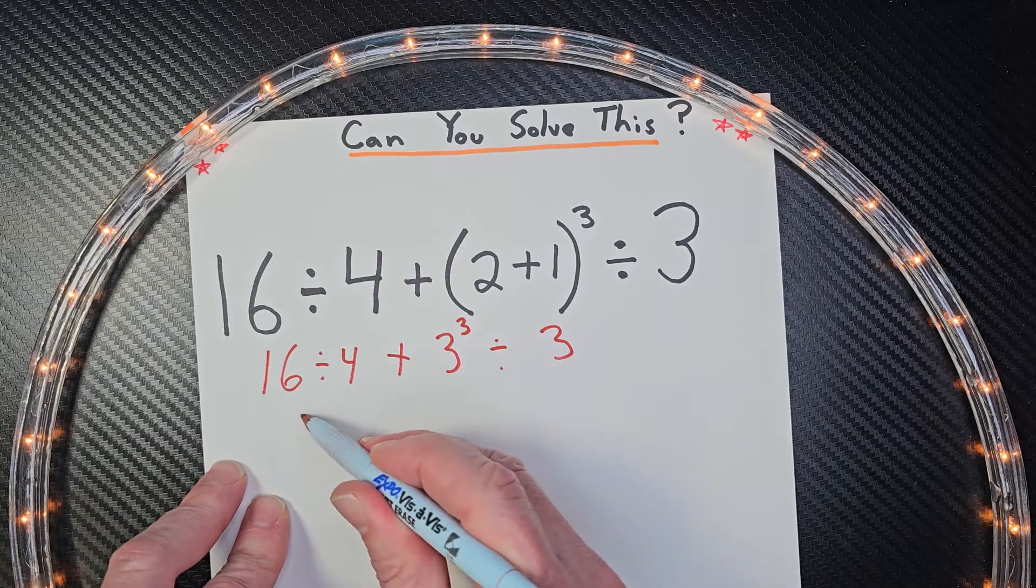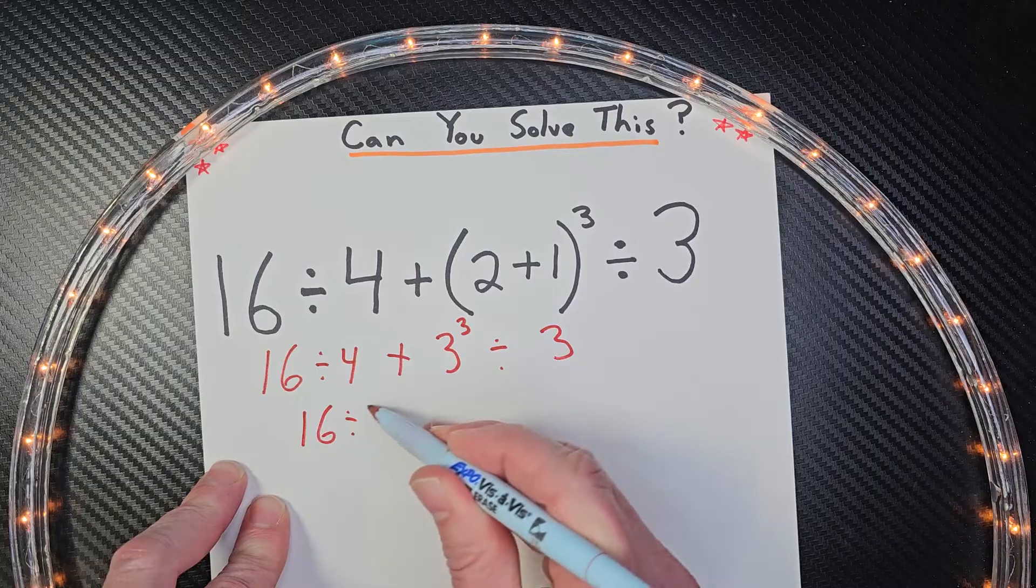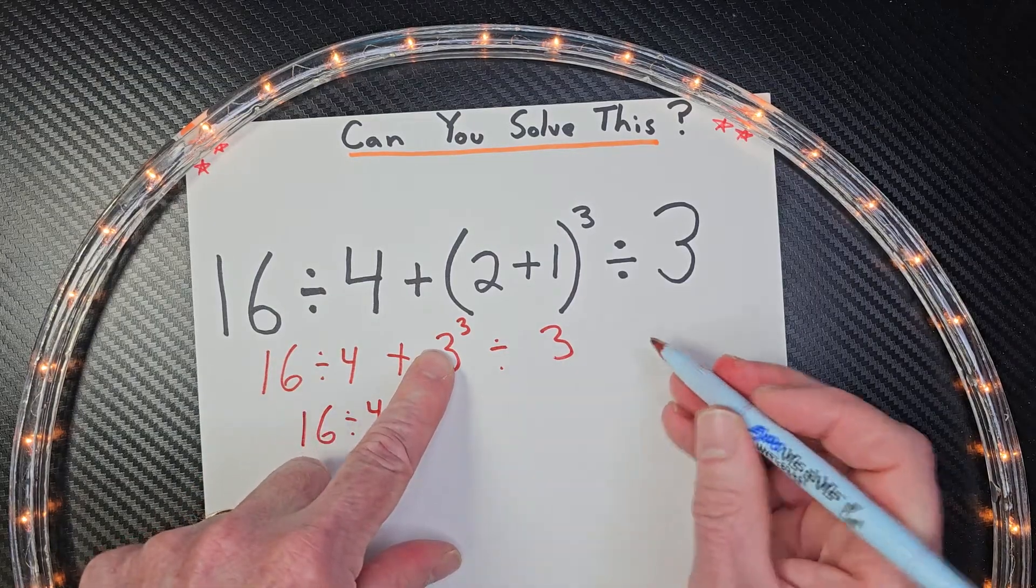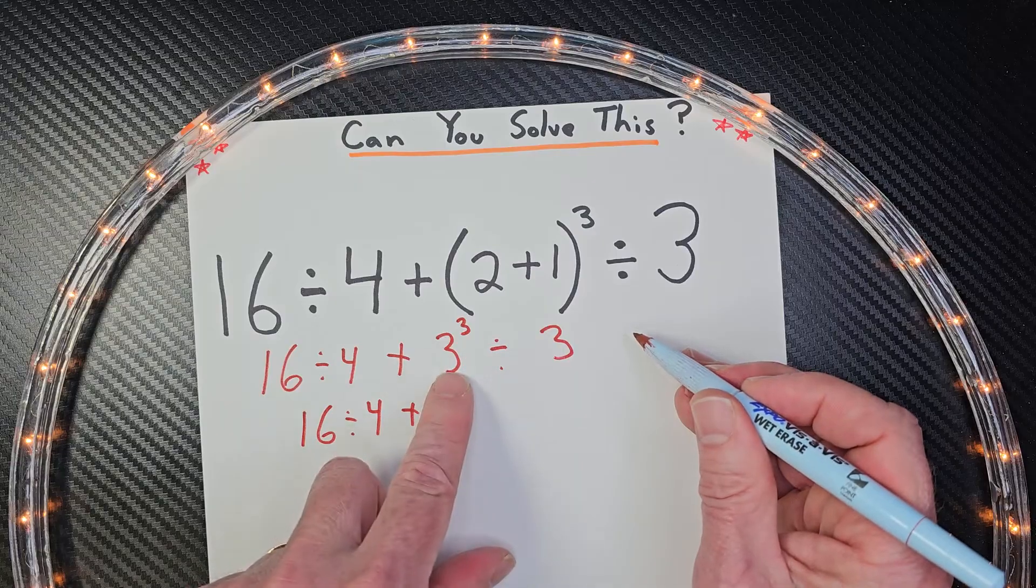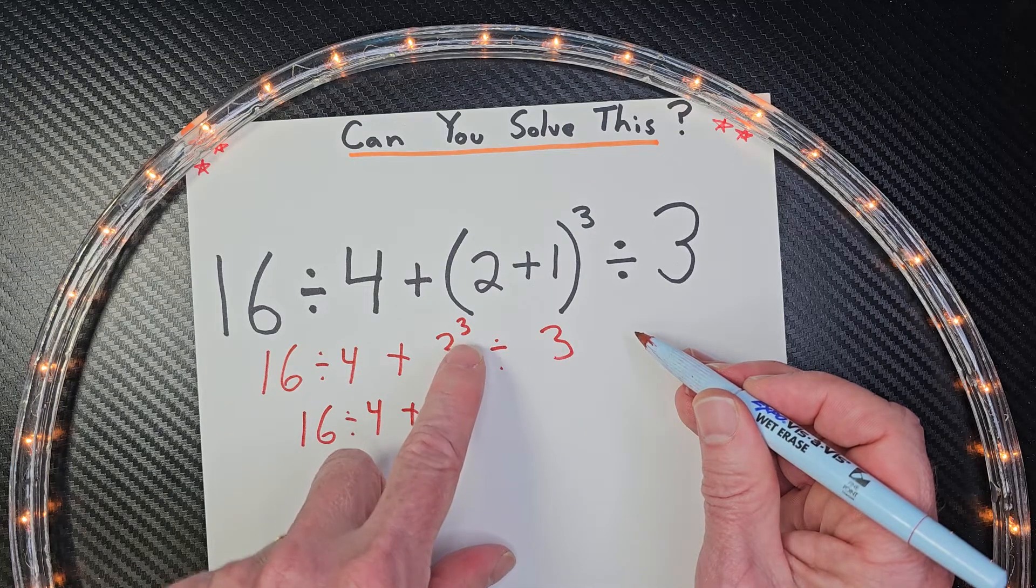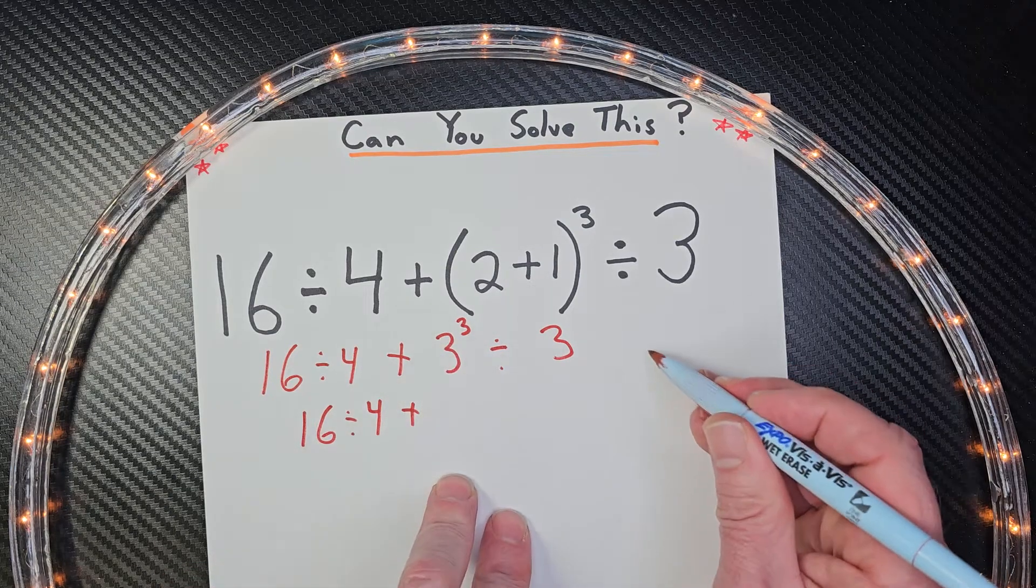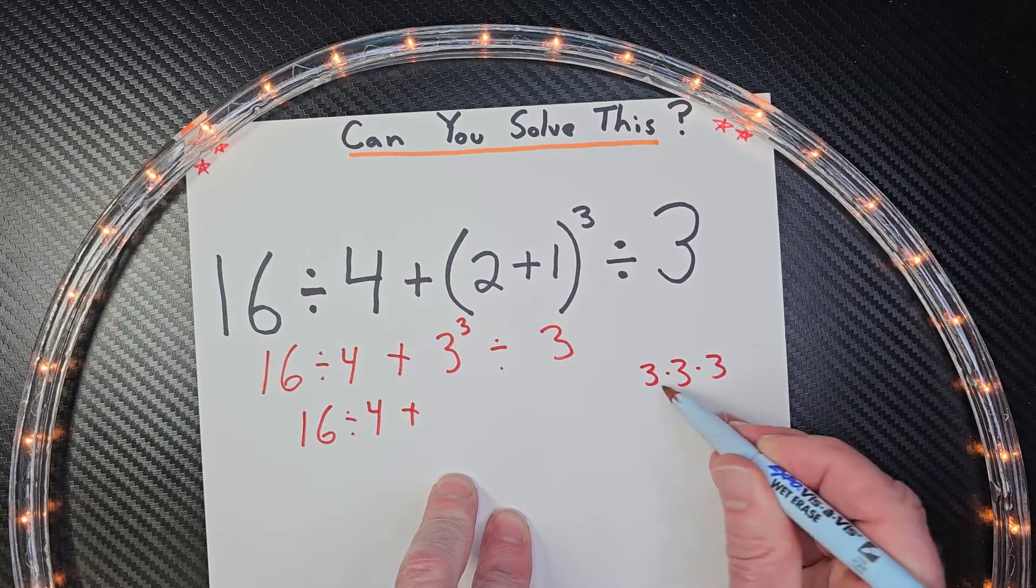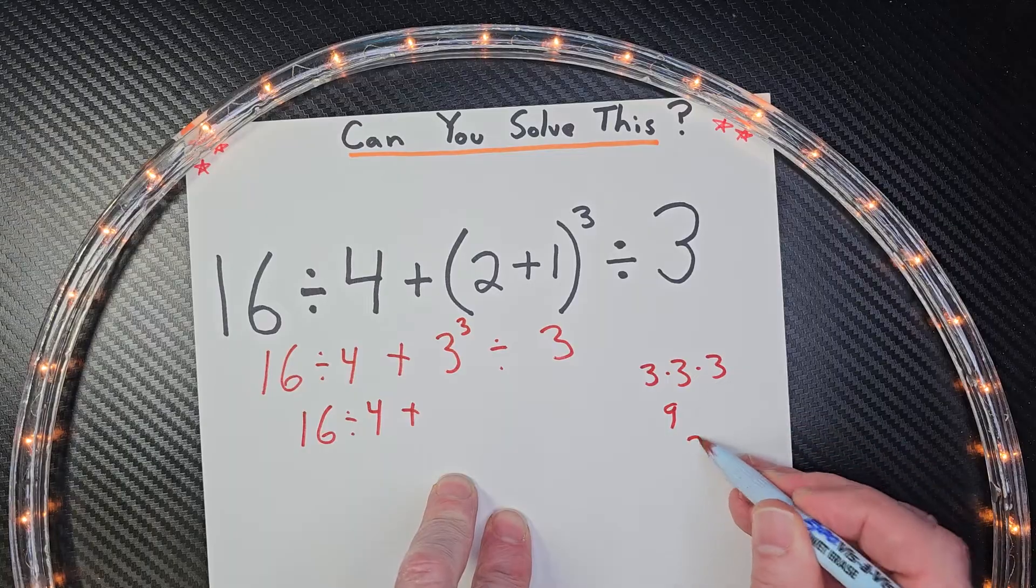So I'm going to rewrite this: 16 divided by 4 plus, and then 3 to the third power. Remember, exponents means you're taking that 3 and multiplying it 3 times, not times 3. So that would look like this: 3 times 3 times 3. So 3 times 3 is 9, 9 times 3 would be 27.